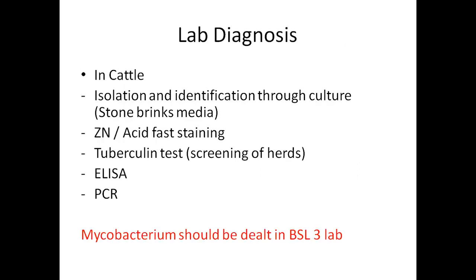Now we come to laboratory diagnosis. In cattle and buffalo, we diagnose it similarly to other bacterial diseases. The first step, which is the gold standard, is isolation and identification of the microorganism by culturing on specific or selective media. In humans, Löwenstein-Jensen media is used to culture Mycobacterium tuberculosis. But to culture Mycobacterium bovis, you need Stonebrink's media. Other available media are also a topic you should prepare yourself — this is important from the examination point of view.